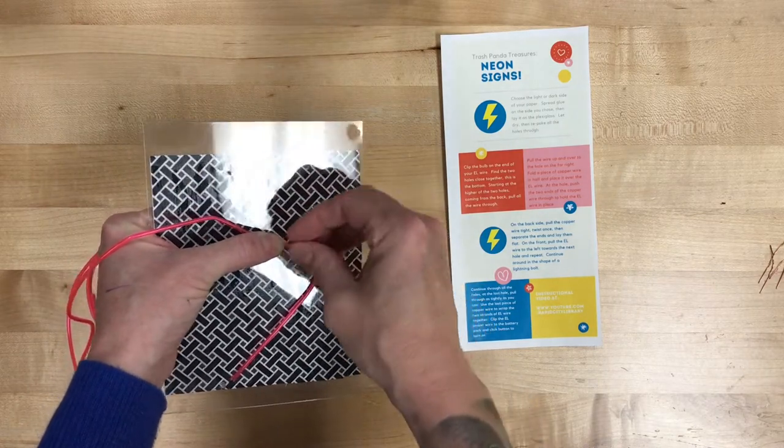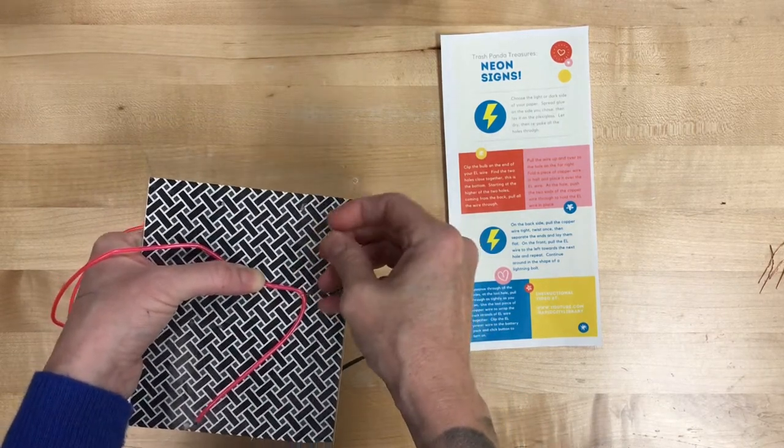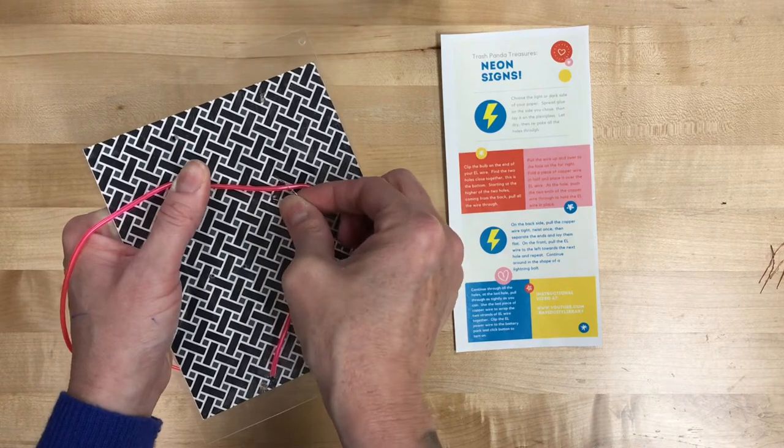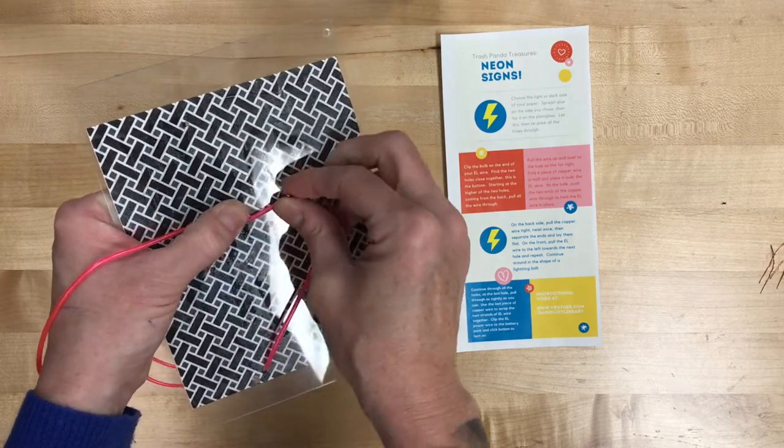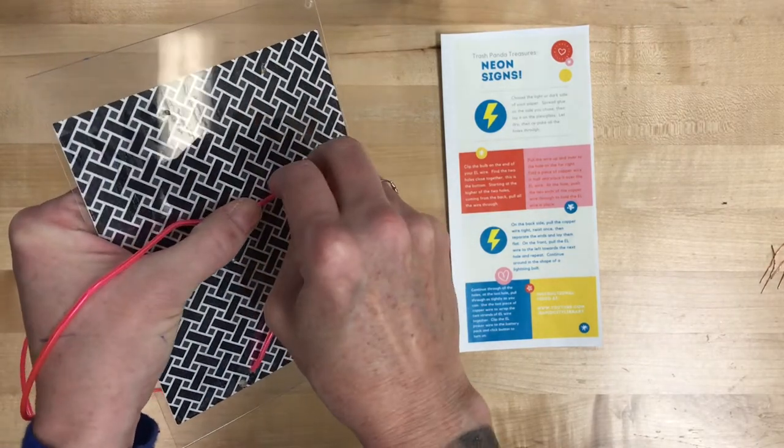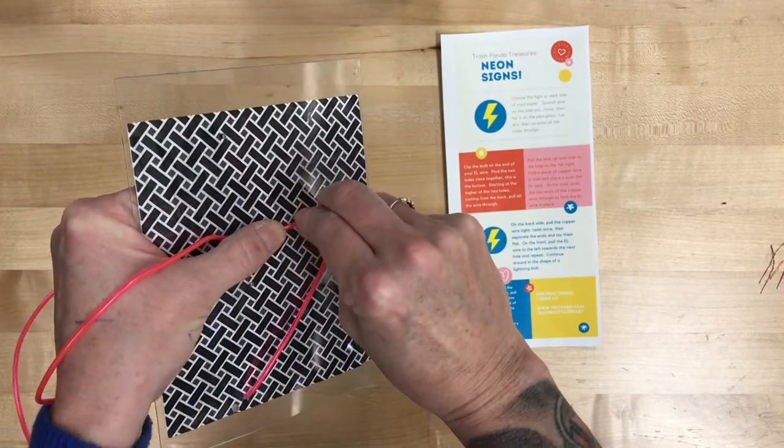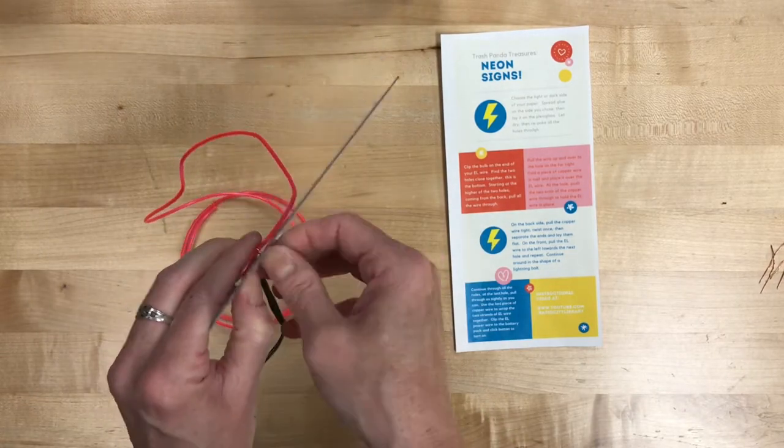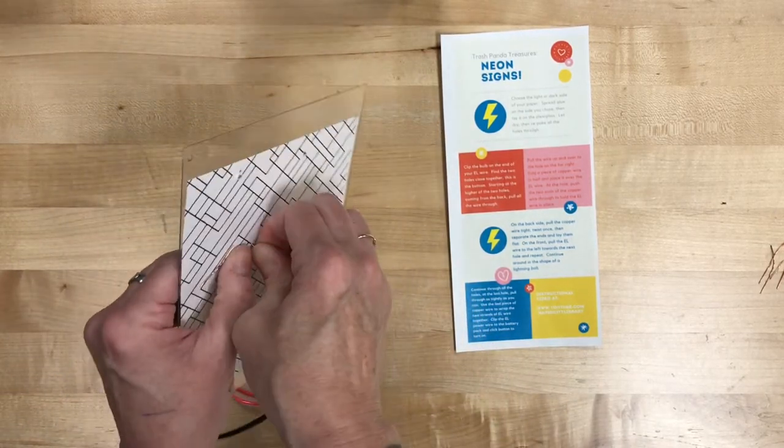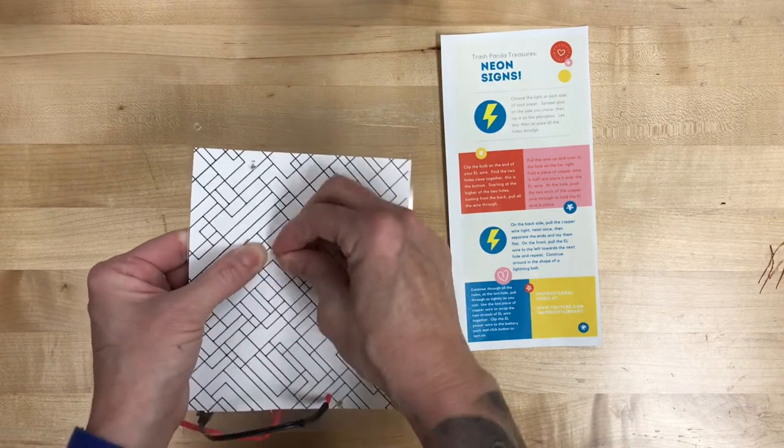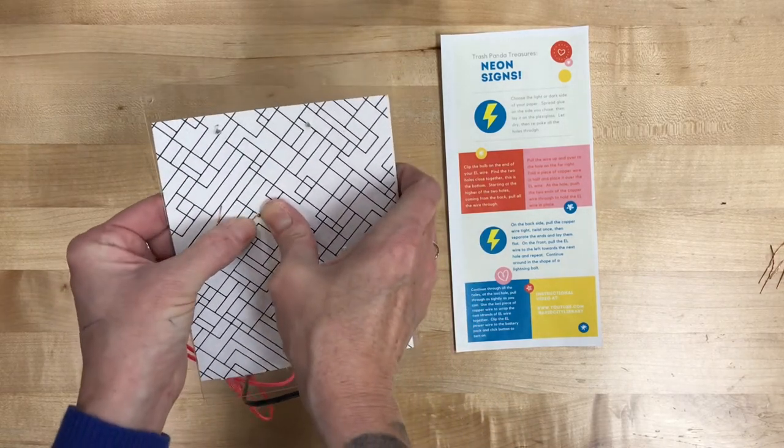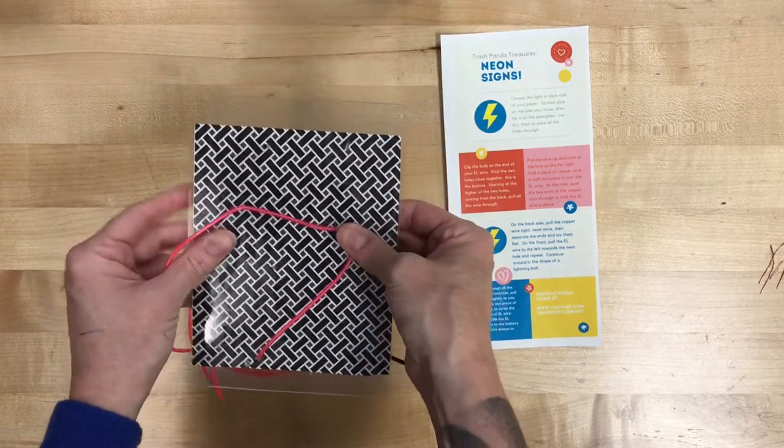So I'm gonna bend it in half. Again I'm gonna leave that loop shape towards the top so it will bend over my EL wire because the EL wire is round. And then I'm going to poke it through those holes to secure it in place where I want it to stay. I'm gonna pull that through and then on the back side I'm gonna lay those wires flat. You can twist it once and then lay it flat. Whatever you think is gonna make it the most secure because we don't want that EL wire to pull out.